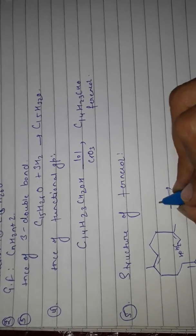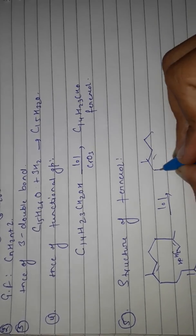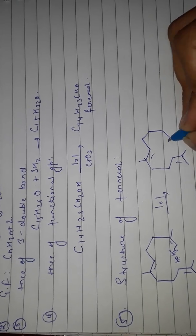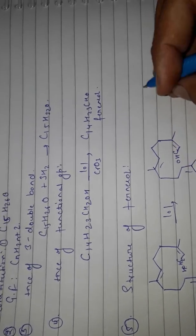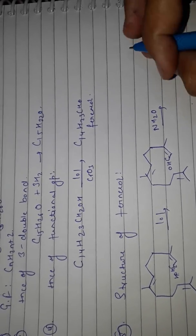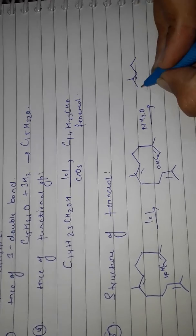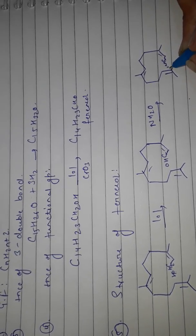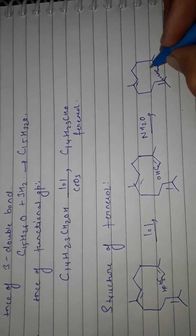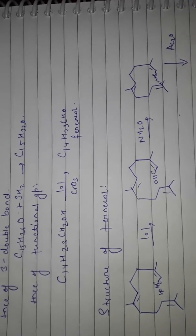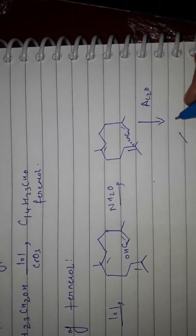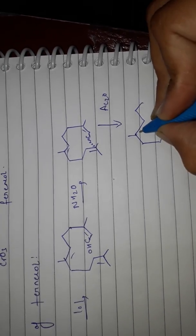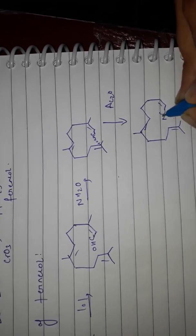Farnesol contains CH2OH. On oxidation we get the aldehyde. Farnesol reacts with NH2OH to give farnesol oxime. The structure CHNOH represents farnesol oxime, and the corresponding derivative is farnesol nitrate.